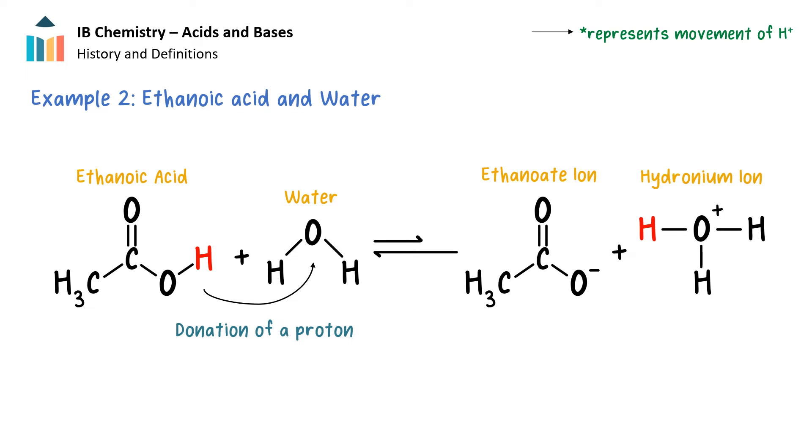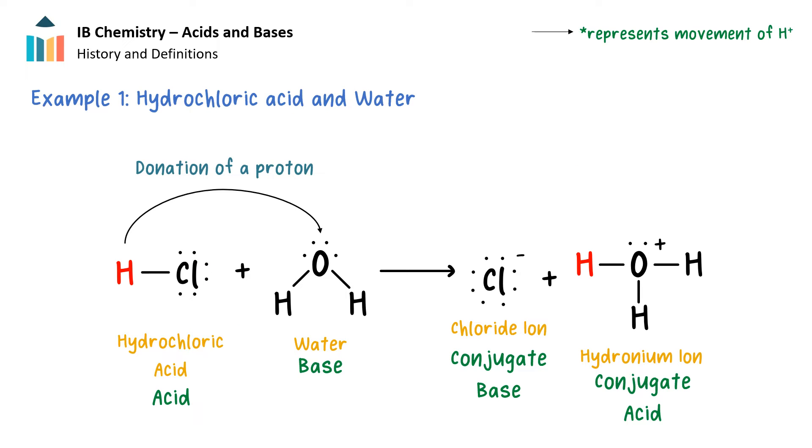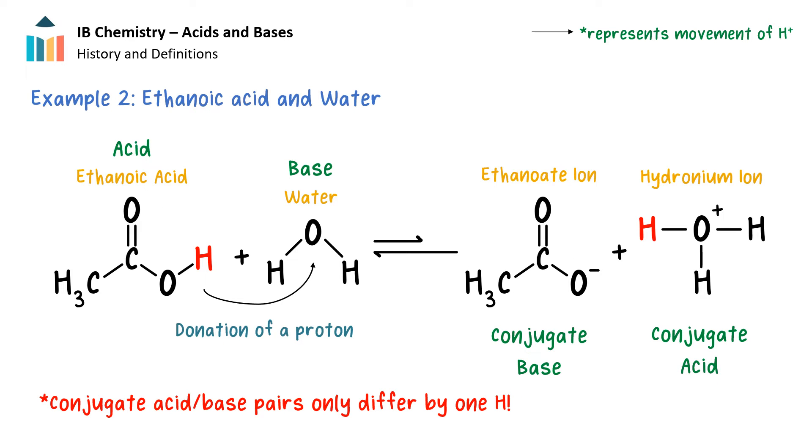Next, we will introduce the idea of Bronsted-Lowry conjugate acid-base pairs. The Bronsted-Lowry acid forms a conjugate base after donating a proton in the reactions mentioned. The Bronsted-Lowry base forms a conjugate acid after accepting the proton. Therefore, in the hydrochloric acid reaction, the first acid-base conjugate pair is HCl and the chloride ion, as the chloride ion remains after the proton has been donated. The second acid-base conjugate pair is the water molecule and the hydronium ion, as the hydronium forms after water accepts a proton. In the ethanoic acid reaction, the first acid-base conjugate pair is ethanoic acid and the ethanoate ion, and the second acid-base conjugate pair is again the water molecule and the hydronium ion.